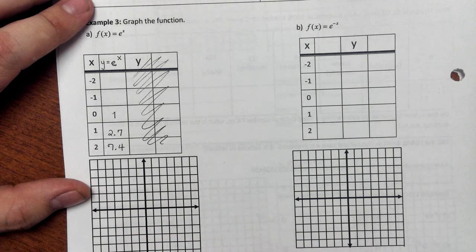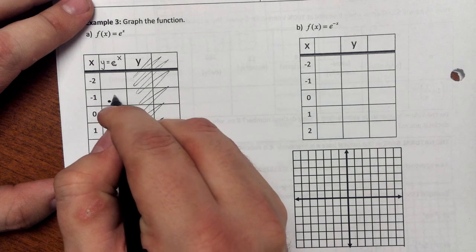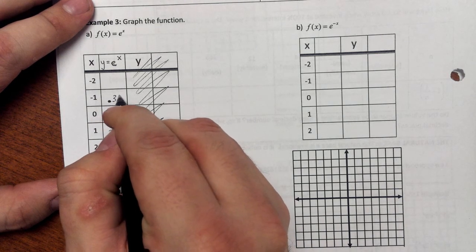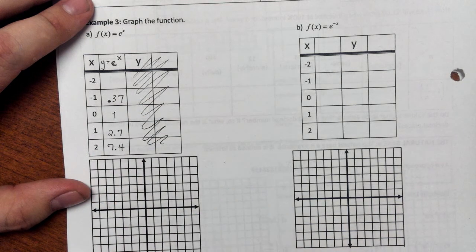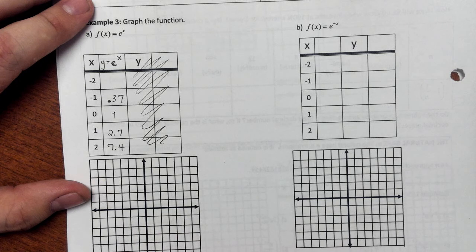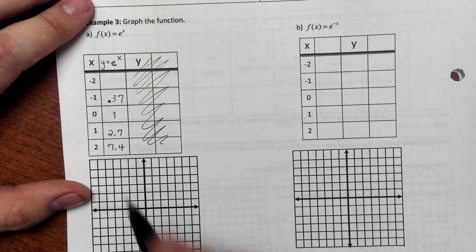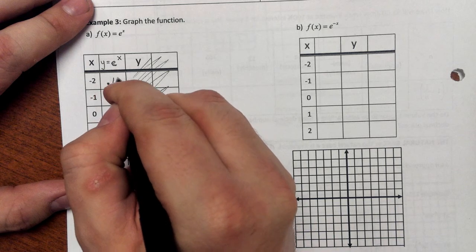And then I want to consider the negative powers of e. Well, e to the negative first, the reciprocal of e, is about 0.3, and I will write 0.37, so that indicates to me it's maybe closer to 0.4, whatever difference that makes when I'm graphing this. E to the negative second, as I look at my calculator offscreen, is approximately 0.1353 or 0.14.